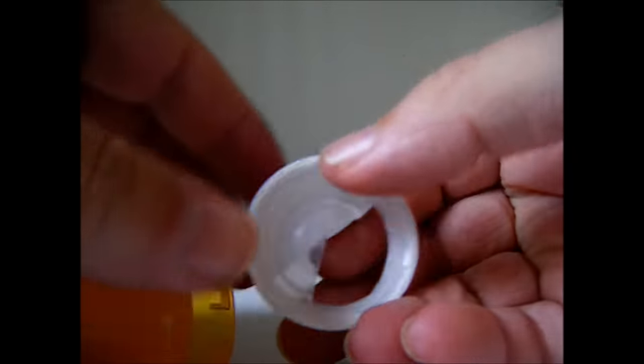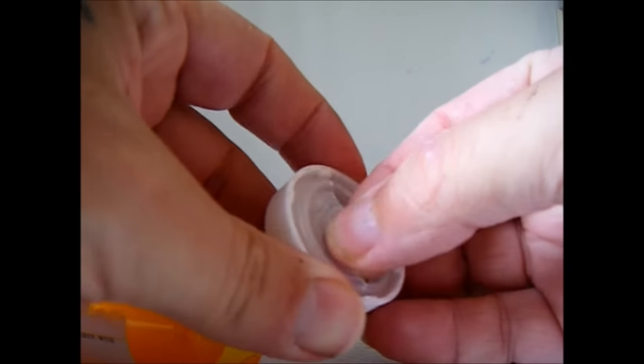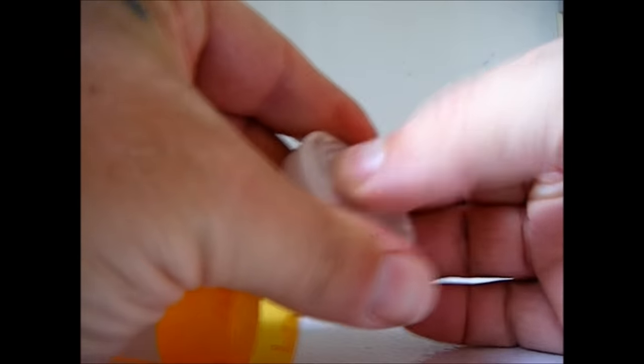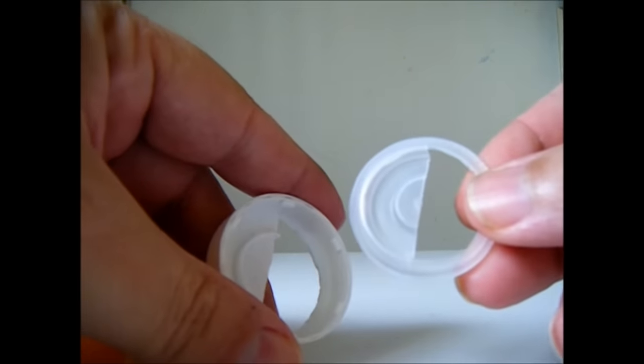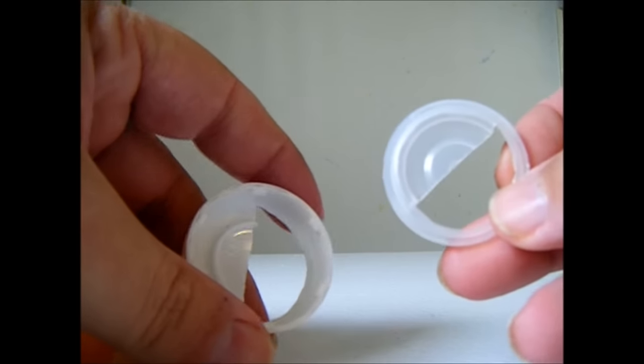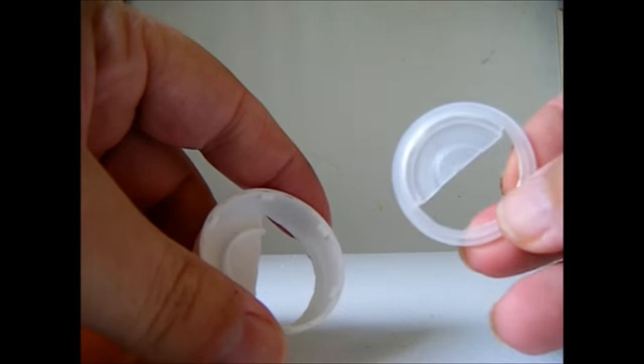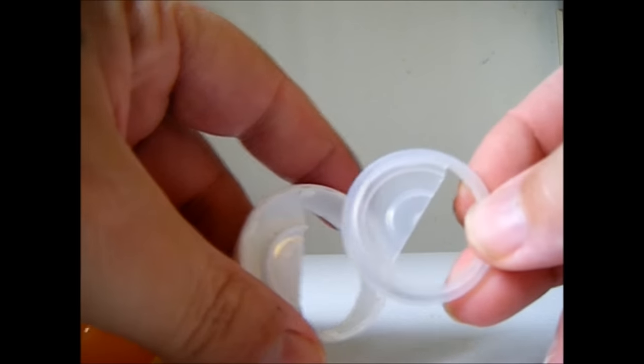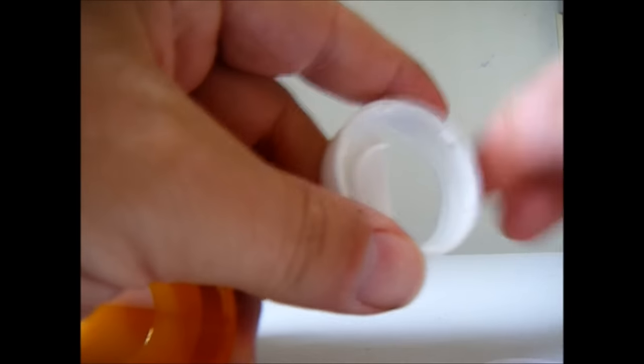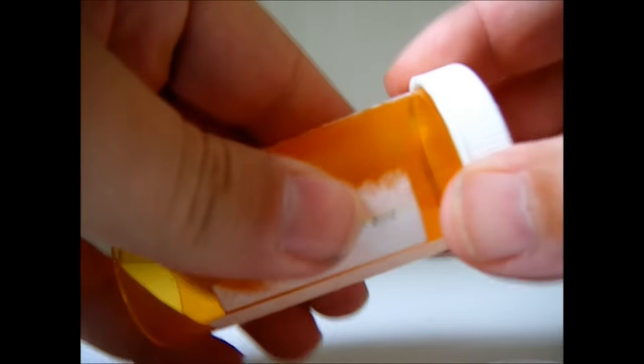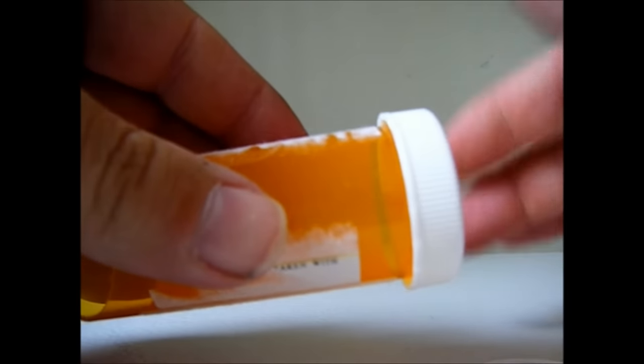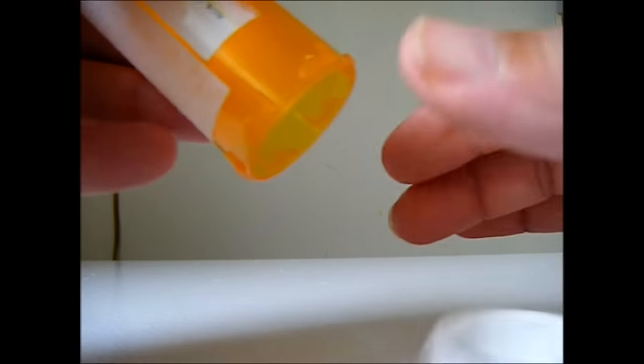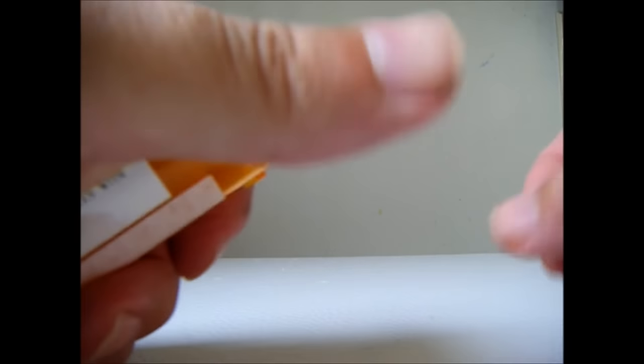Alright, now this is a real tricky thing. See inside that lid is this little seal. Okay, you're going to have to mark that and cut that out as well because that's what holds your lid tight. Without that, your lid is just going to, I mean it will turn but you know, it's junk that way.